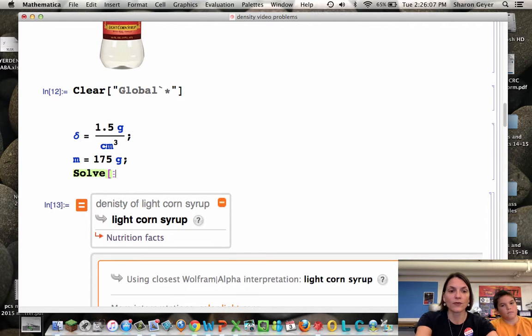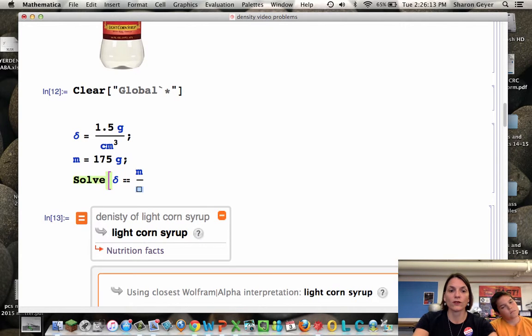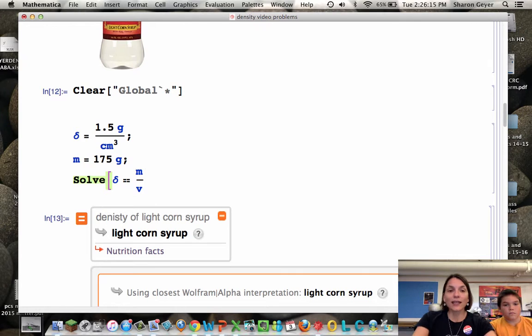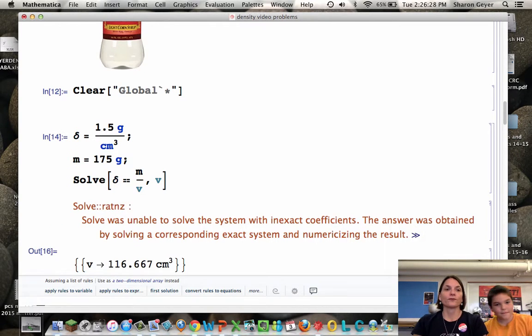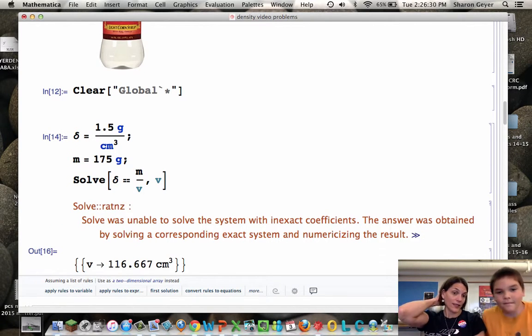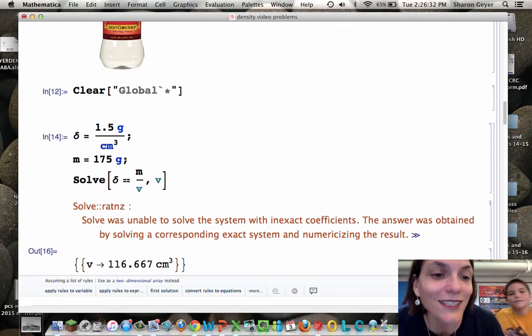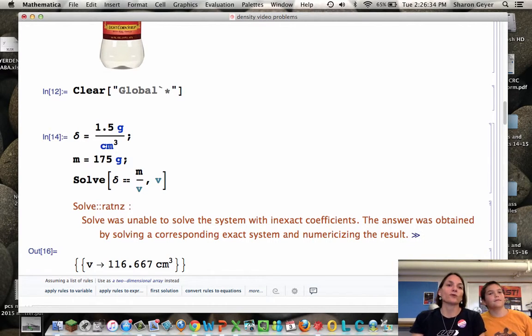We're going to type solve, square brackets, and now our density equation. Escape, rho, escape, double equals, M, control question mark, over V. This time, we're actually going to solve for volume, not density. So I'm going to put V. And close my square brackets, and shift return. There it is. That's not so hard. 116.667 centimeters cubed.